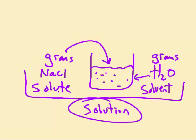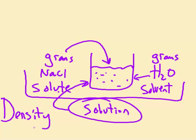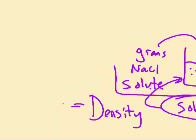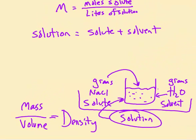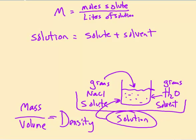In this kind of calculation, we're going to know the density of that solution. Density is equal to the mass of the solution divided by the volume of the solution — the total grams divided by how much space it occupies. Density is mass divided by volume.